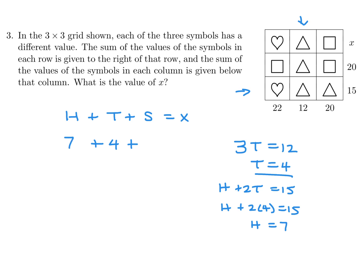Now I just have to find S. Using another equation: two squares plus a triangle is 20. Triangle is 4, so two squares is 20 minus 4, which is 16, giving S equals 8. So that means X would be 19.